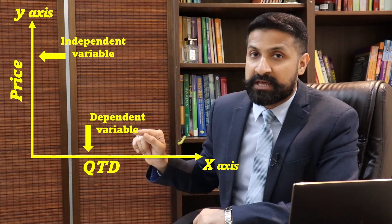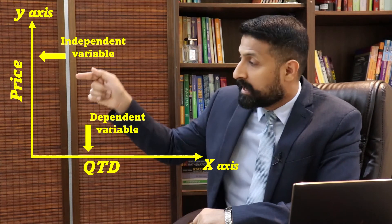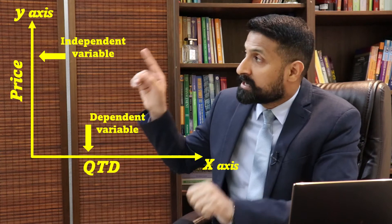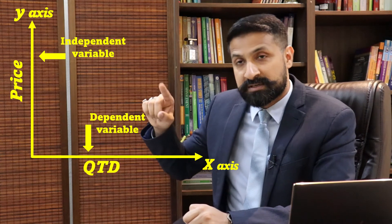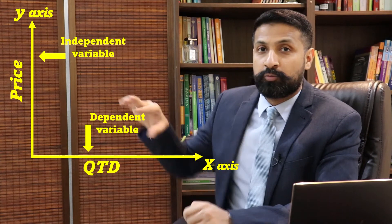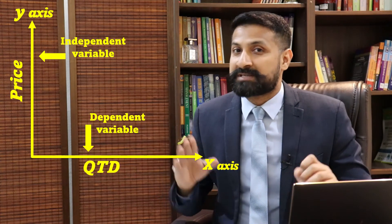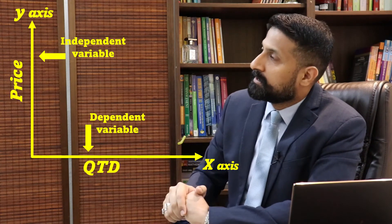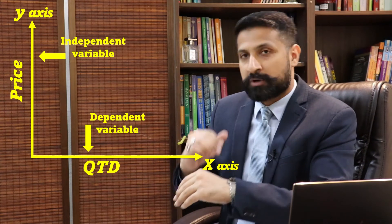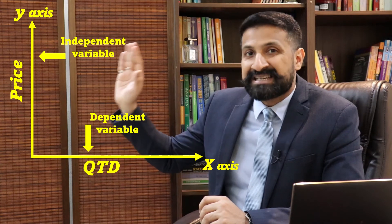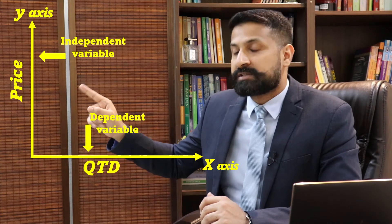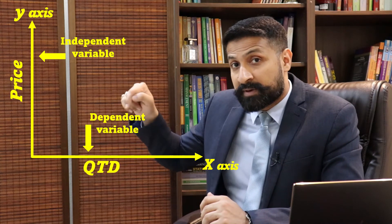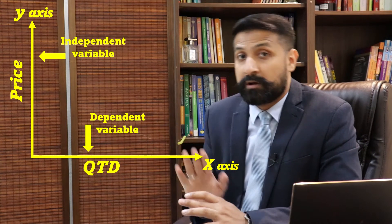Economics says that the independent variable is placed on the Y axis and the dependent variable is placed on the X axis. This is the convention in economics, which differs from other subjects like math. So it is clear that price is the independent variable — when price moves it impacts the dependent variable — and independent variables go on the Y axis.